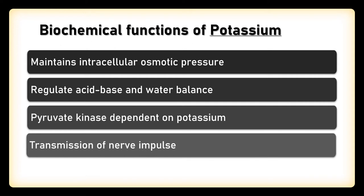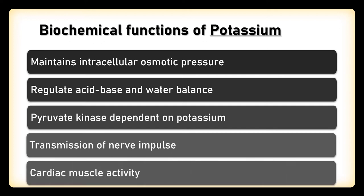Potassium is required for the normal action potential inside the nerve cell. Adequate intracellular concentration of potassium is necessary for proper biosynthesis of proteins by ribosomes, and extracellular potassium influences cardiac muscle cell activity.